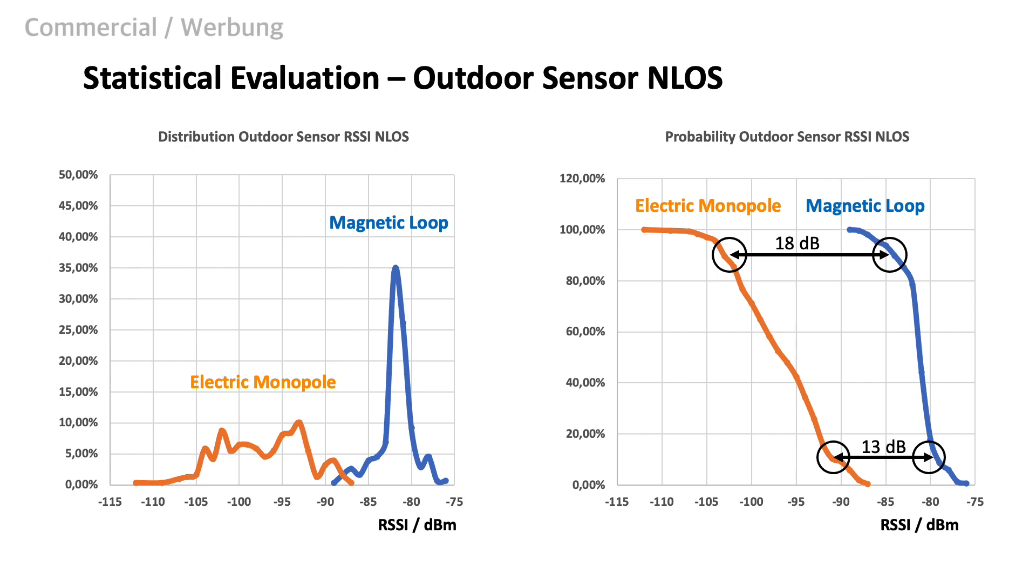Let's see now what we can learn from our 48 hours evaluation. First, we look at the outdoor scenario where we have no line of sight between transmitter and receiver. To my surprise, the graphical evaluations are looking significantly different for the two antennas. I expected that there will be a lower standard deviation for the magnetic antenna, but not such a significant difference.